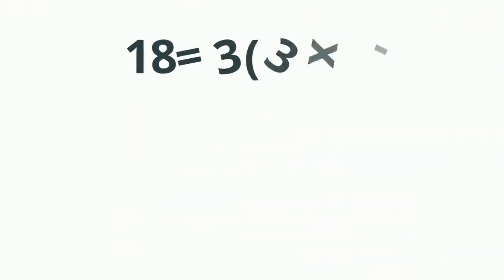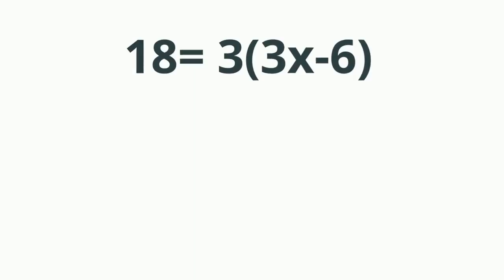We have 18 equals 3 in parentheses 3x minus 6. What I'd like to do is get the exponents on one side and the constants on the other. But first, I need to distribute the 3 that's on the outside because I have parentheses, and I'm going to deal with these first.